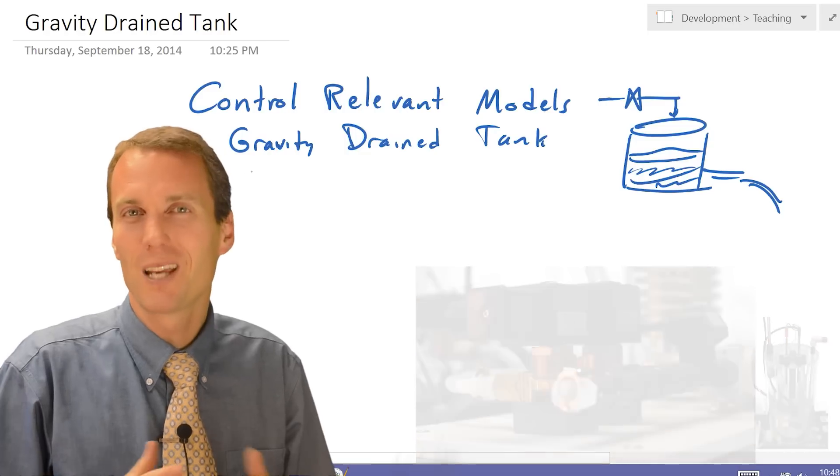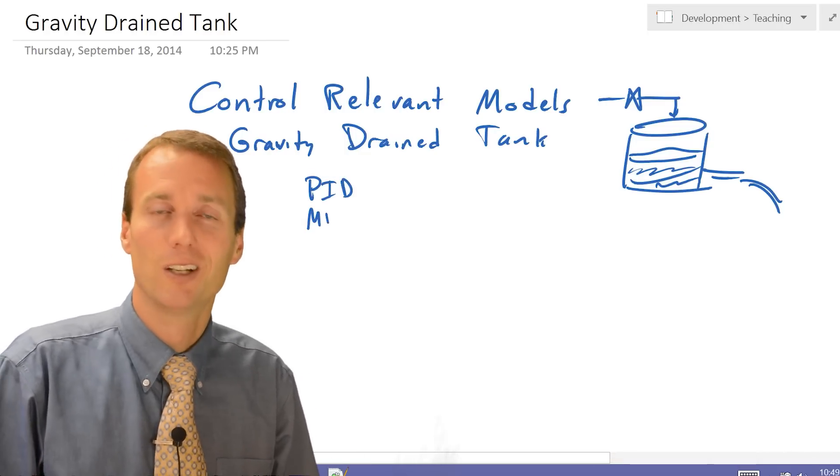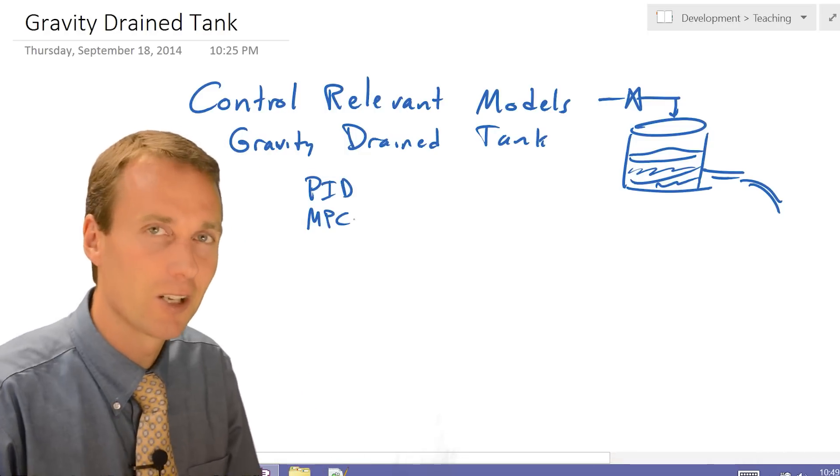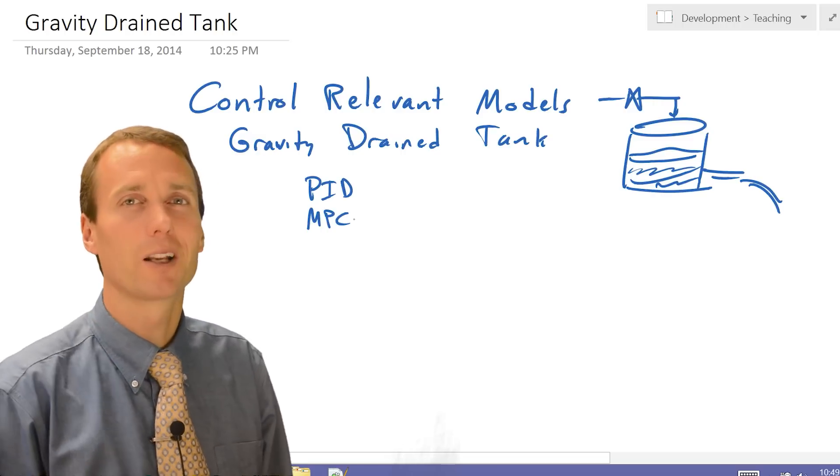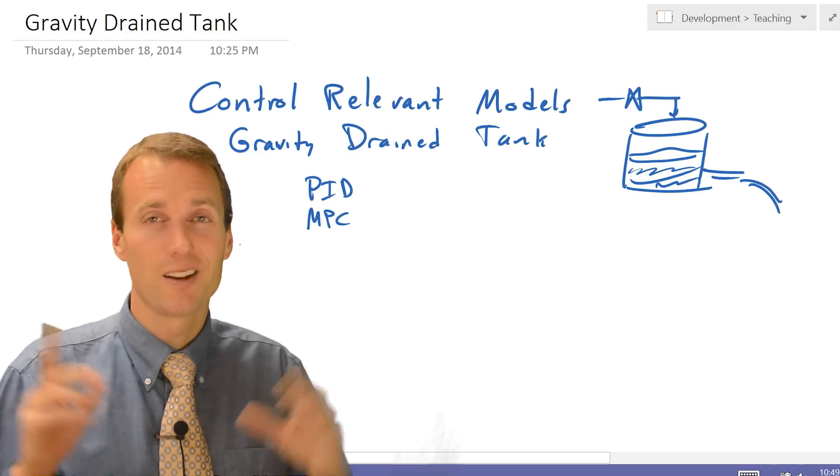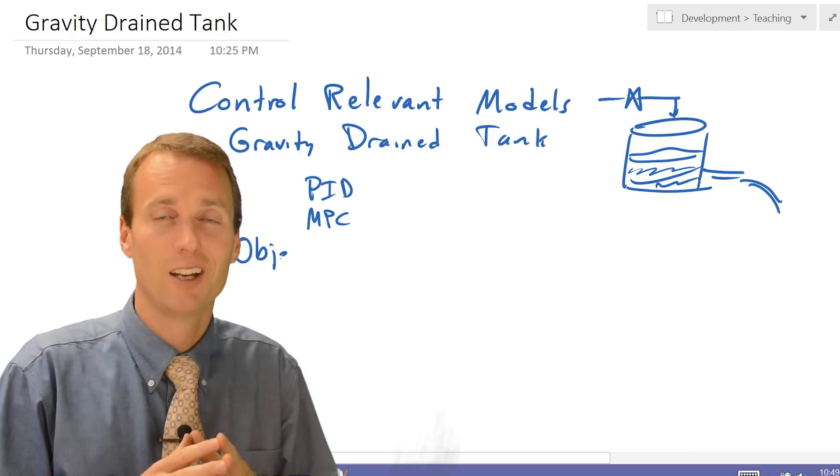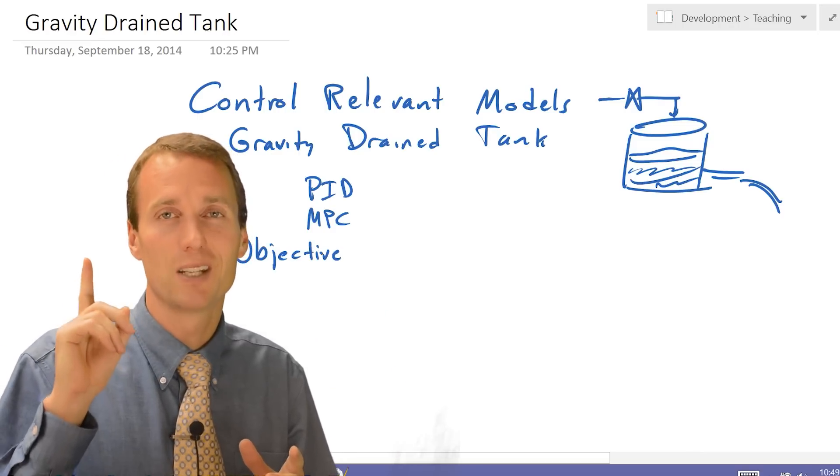Controlling either with a PID controller or optimizing through model predictive control, or dynamic optimization. So there's just a couple steps that we want to go through in developing this model. The first one, even before we start anything else, we need to identify our objective. So the very first step is identify objective.